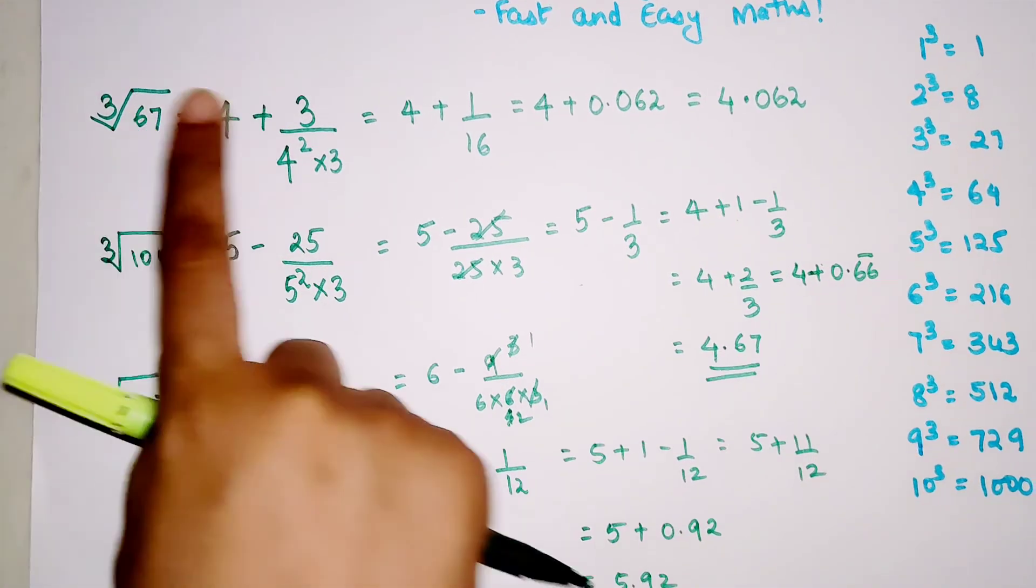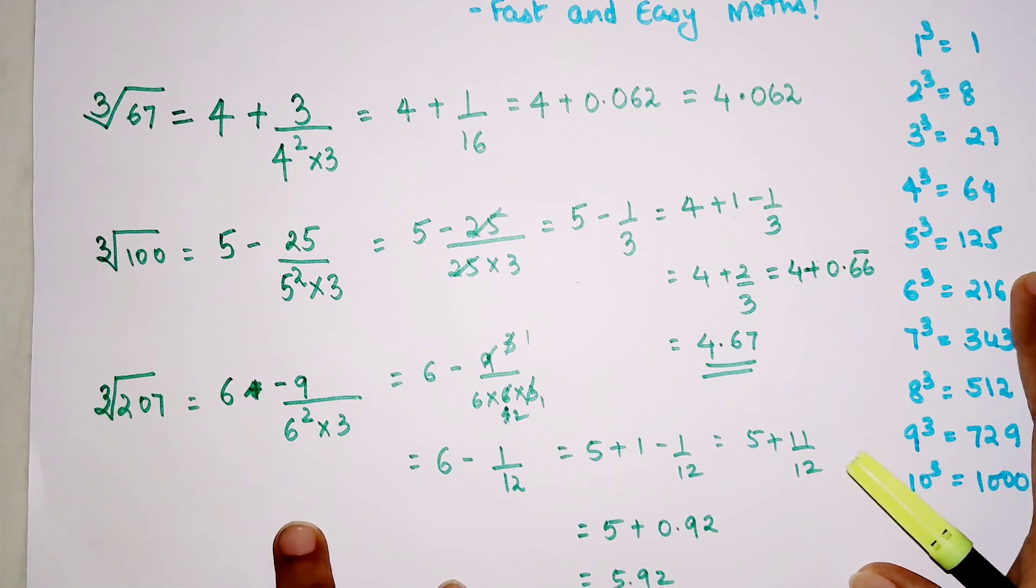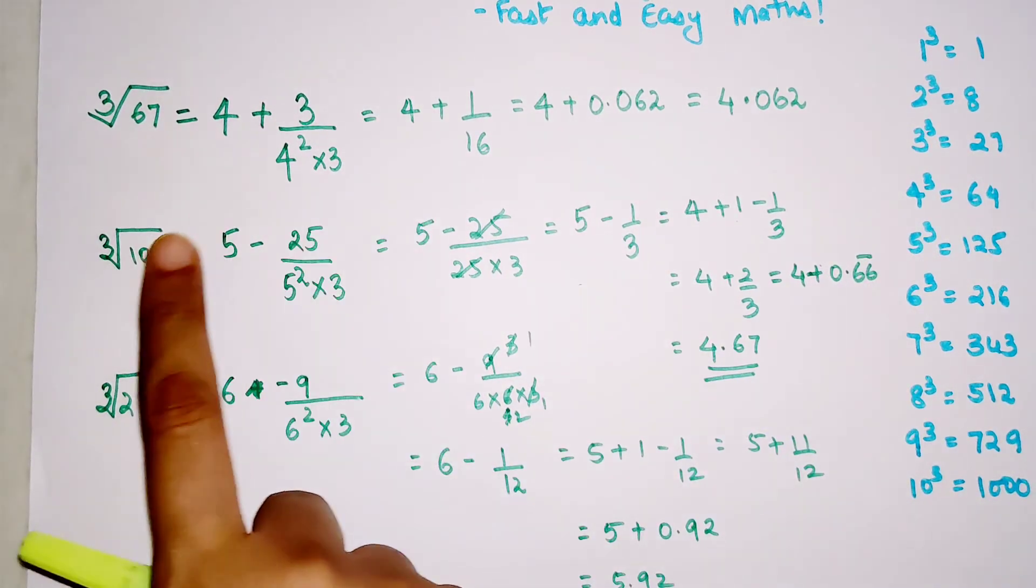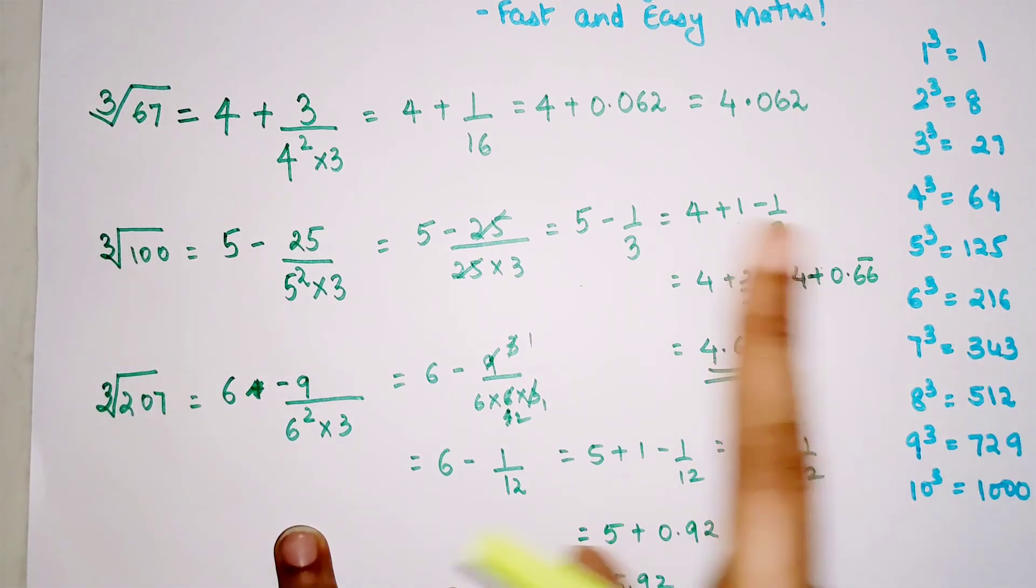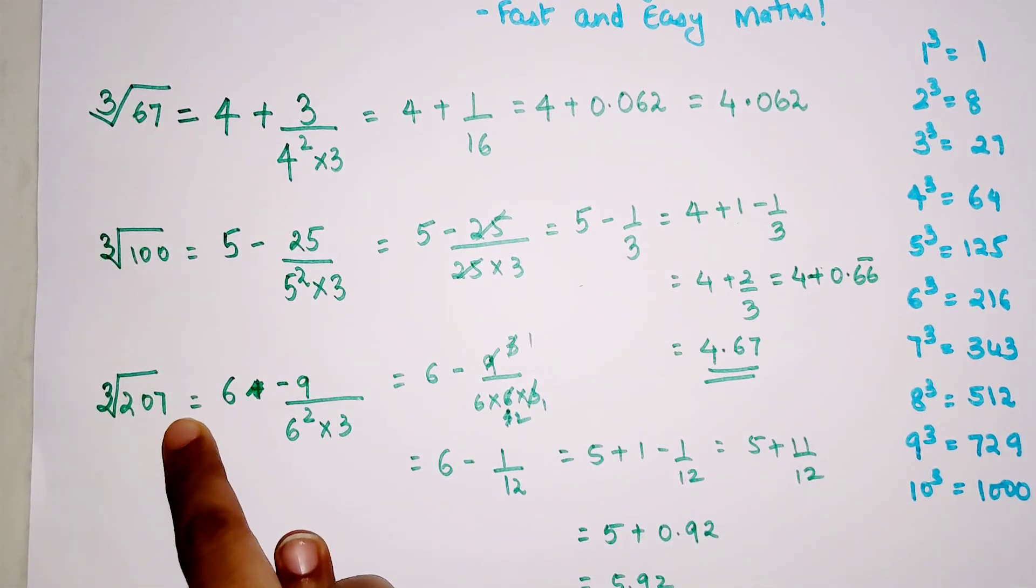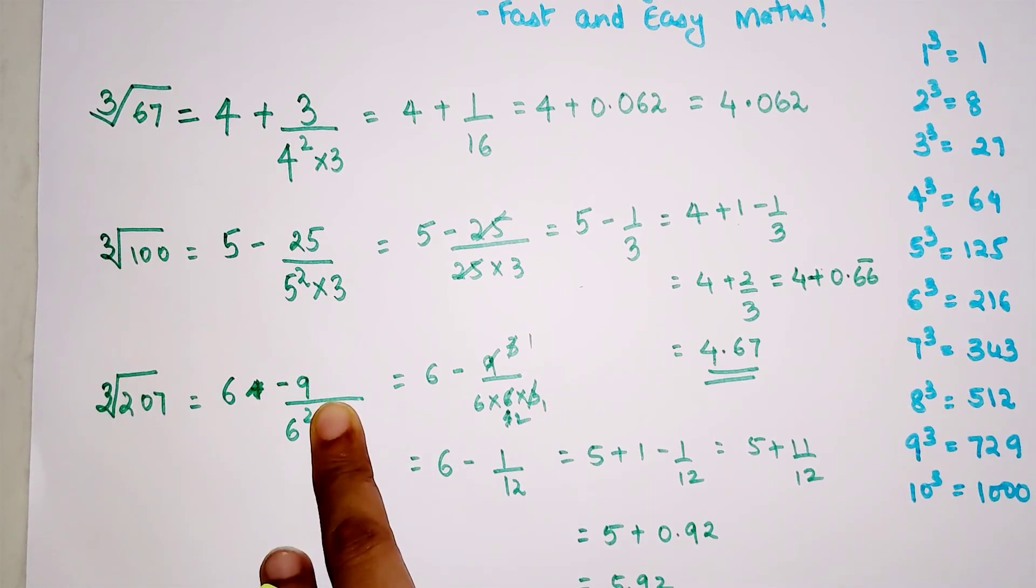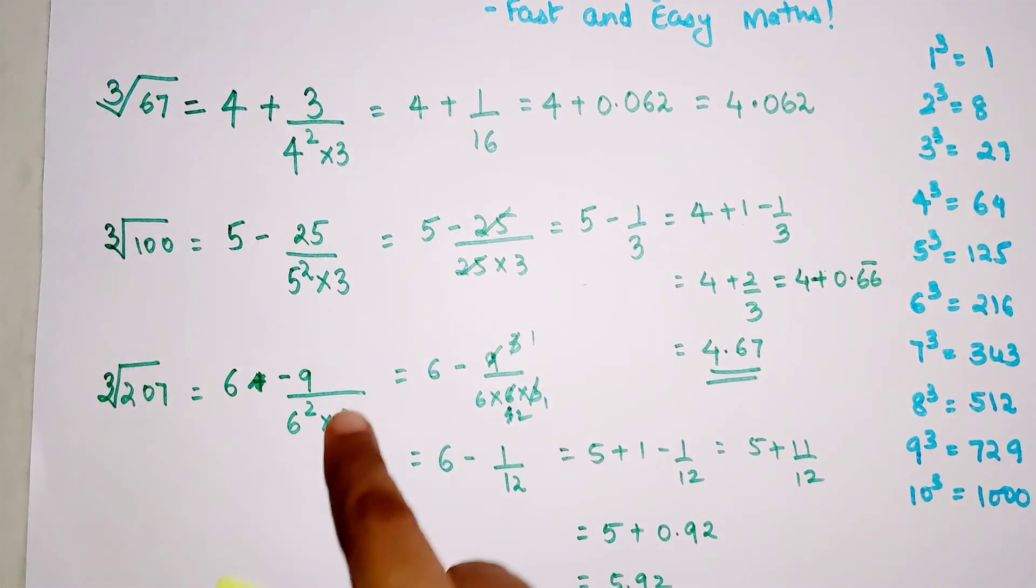Then whatever is the difference—please understand, by taking the difference you will subtract the number given from the cube. So 67 minus 64 gets you plus 3, 100 minus 125 gets you minus 25, and 207 minus 216 gets you minus 9.